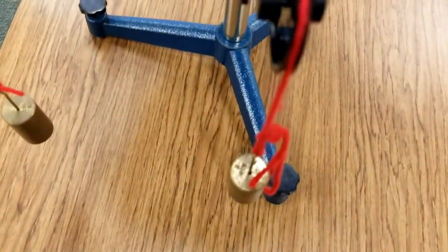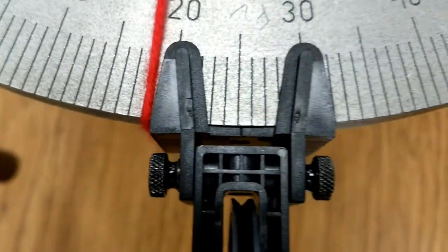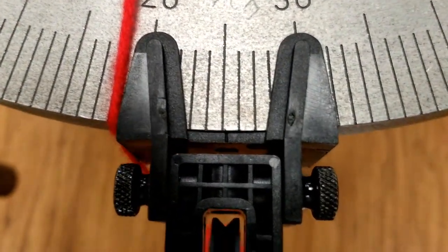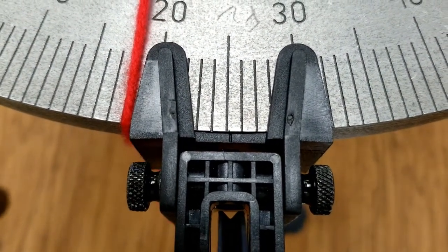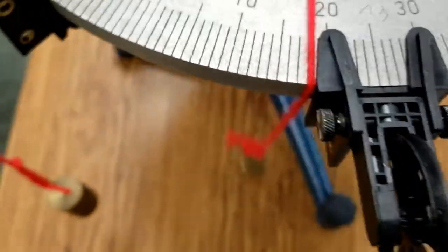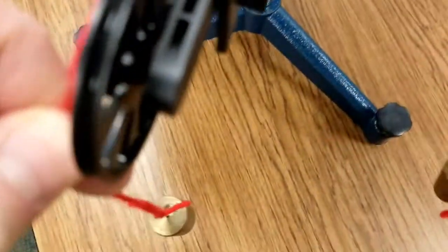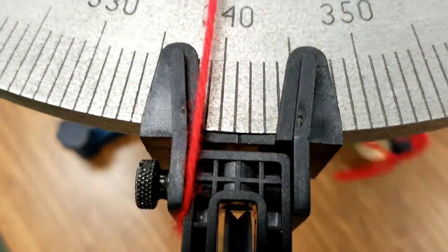So this is the 100-gram mass. We've already found the mass of that one. And there's the angle right there. And you can see the notch. So you can get an estimated digit. And then over here, this is the 200. Pull that off to the side. And you can see that angle right there. And there's the notch.